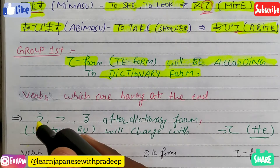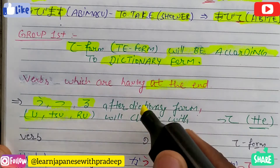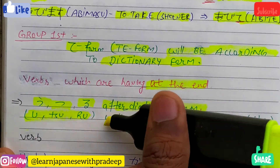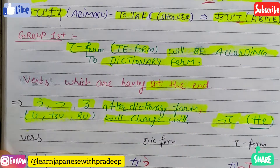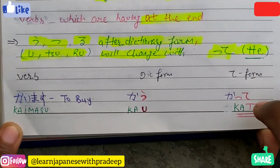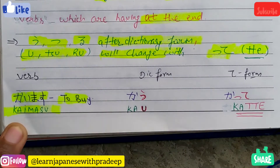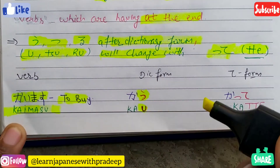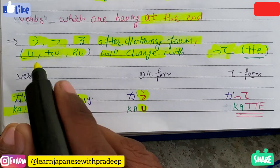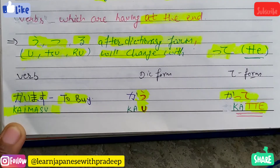Verbs which are having u or ru at the end after making the dictionary form would change with tte — double t, te. For example, kaimasu means 'to buy'. If you change it to dictionary form it becomes kau, and this u at the end changes with tte, so kaimasu becomes katte in te form.